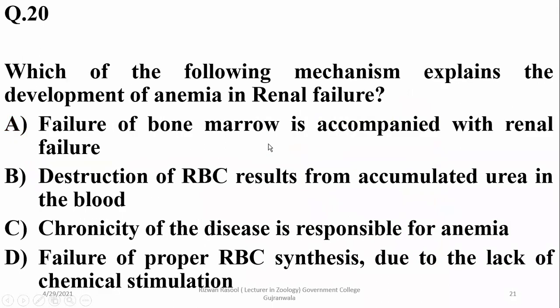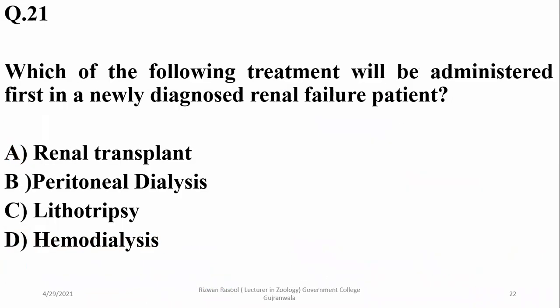Question number twenty: which mechanism explains the development of anemia in renal failure? It is due to failure of proper red blood cell synthesis, because of the lack of chemical stimulation from the glomerular part of the kidney, which produces the hormone erythropoietin. Erythropoietin stimulates red blood cell production, so renal failure leads to a deficiency of blood cells.